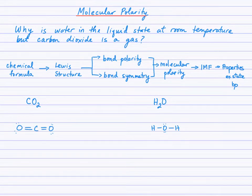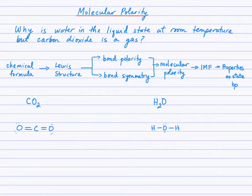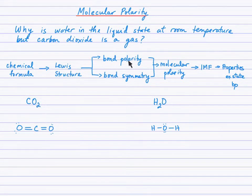We see the 16 valence electrons of one carbon and two oxygens arrange in this structure — two double bonds between carbon and oxygen atoms. And water, we see the Lewis structure here with eight electrons. Now, when you look at the flowchart, we've written the chemical formula, then drew the Lewis structure. Now we need to consider the bond polarity of these bonds, as well as the bond symmetry.